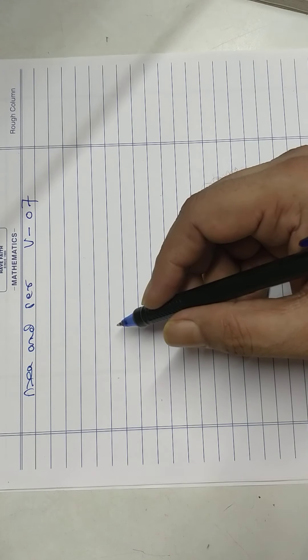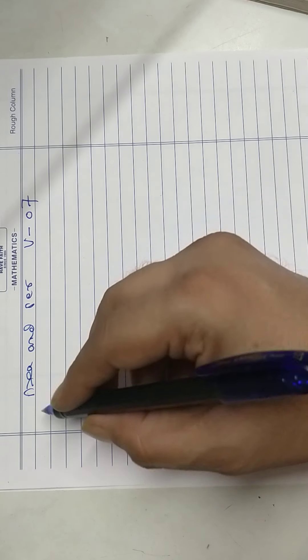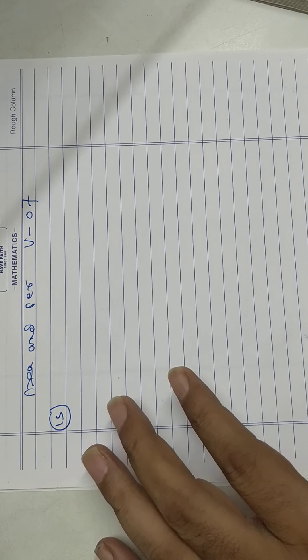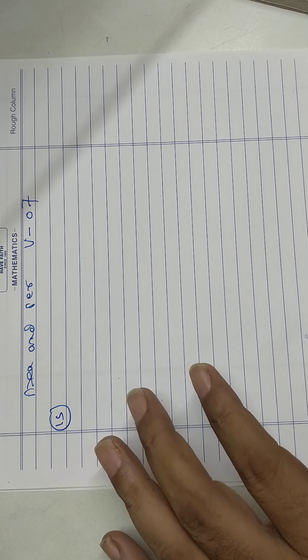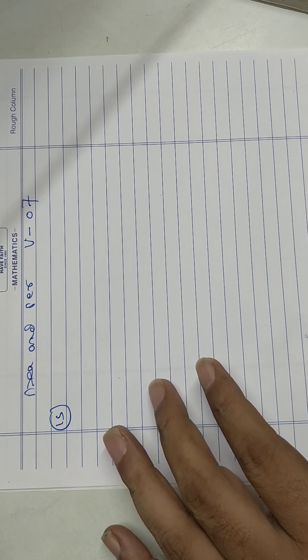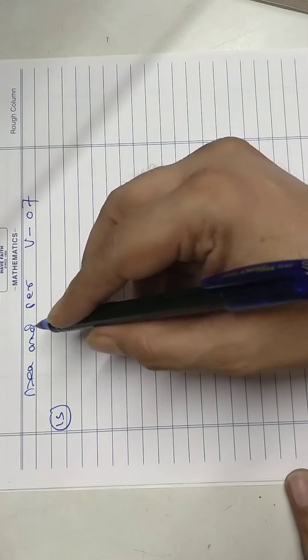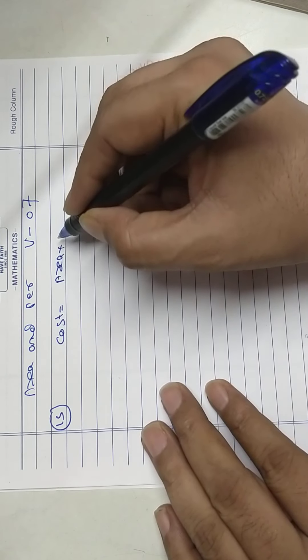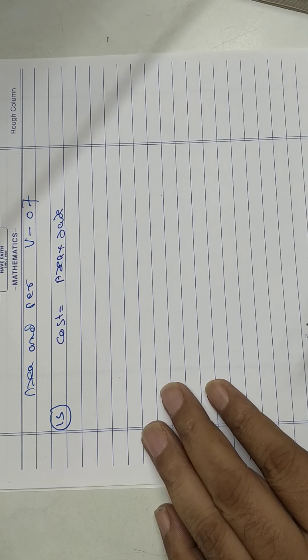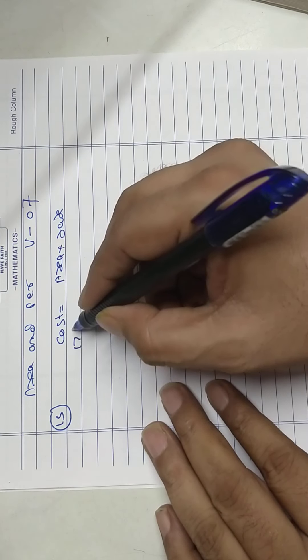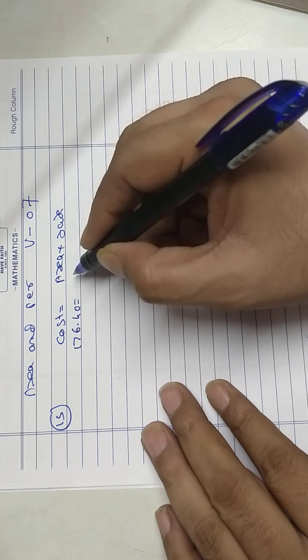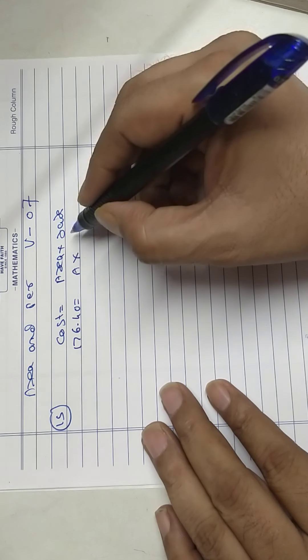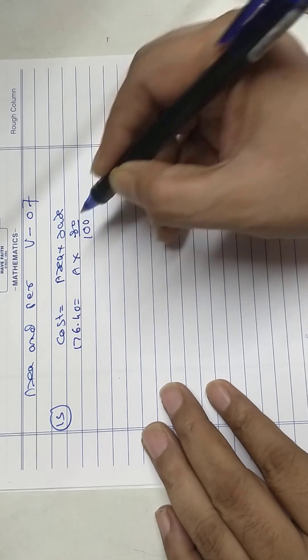Area and perimeter video number 7, sum number 15. Cost of painting the top surface of a triangular board is 80 paisa per square meter. Cost equals area times rate. Cost is 176.40, area we don't know, rate is 80 paisa per square meter. I'll do 80 upon 100.